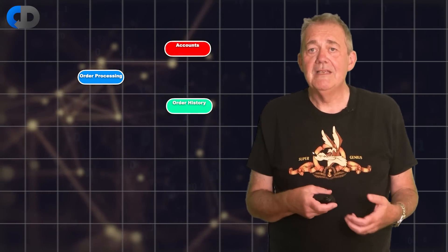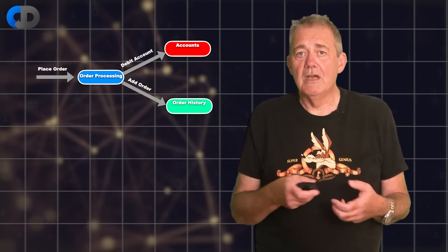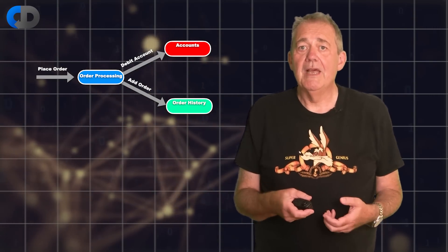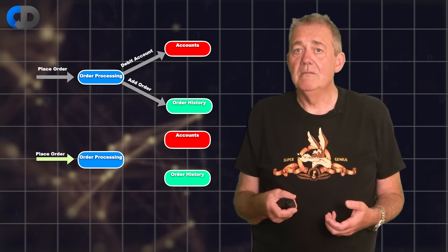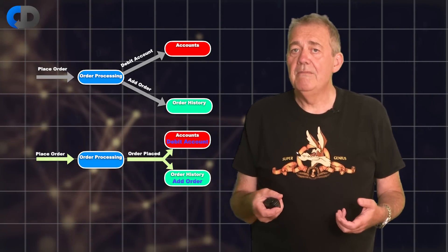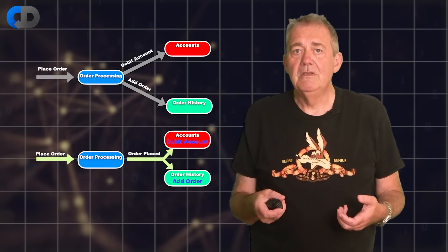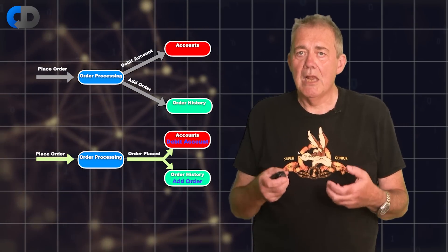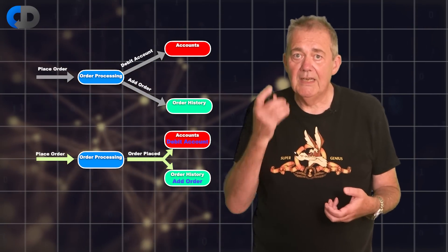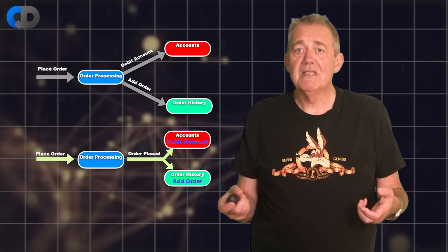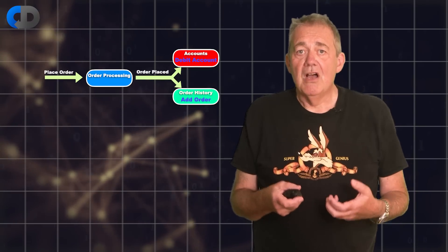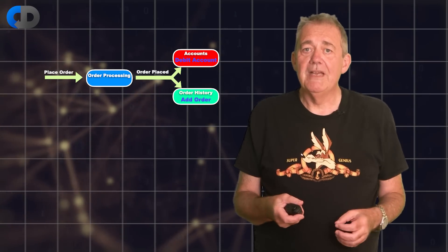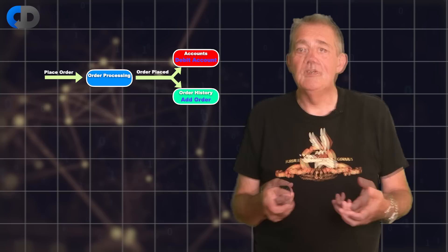For example, I could choose to place an order, and when my order is placed, the code that records it goes on to find the relevant account, deduct the payment, and update the account history. Or we could implement this as a more event-based system. The same stuff tends to happen but is orchestrated in a very different way. Order processing is a lot simpler externally — it only needs to publish one message instead of two: order placed. If these messages are asynchronous and have some form of assured delivery, order processing can fire and forget the order placed message, allowing it to carry on doing other useful work as soon as it is sent.